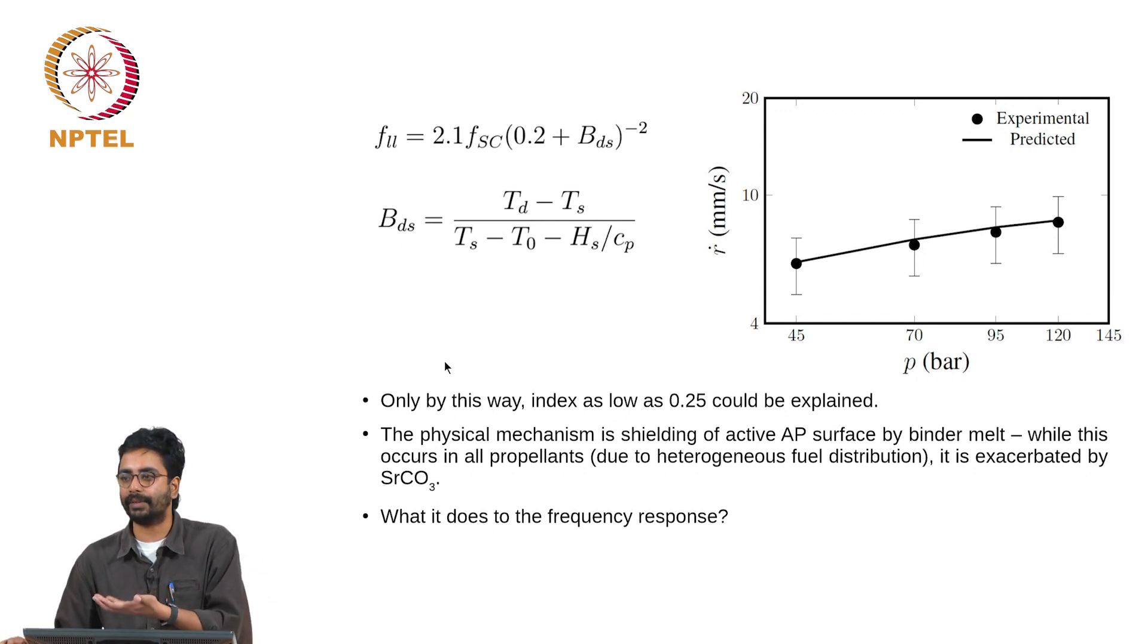Therefore, active AP surfaces are blocked, thereby bringing down the burn rate as well as the index. This effect is accounted for through what is called the liquid layer effect, which is simply a functional form taken as what is shown here. This is an extension of the blocking effect in hybrid rockets to the extreme case where the surface is blocked by the melt itself. Only by this way, index as low as 0.25 could be explained.